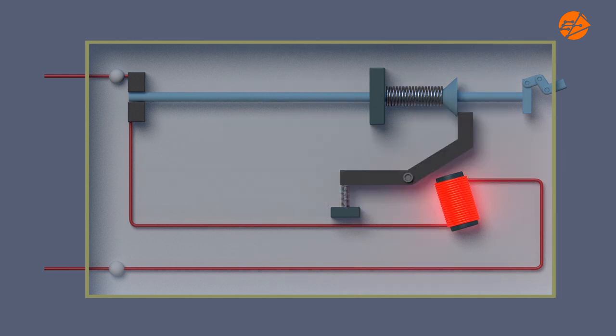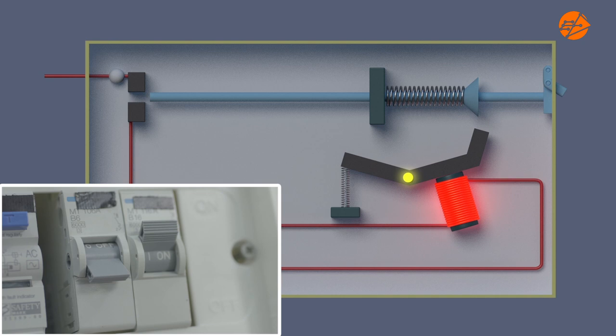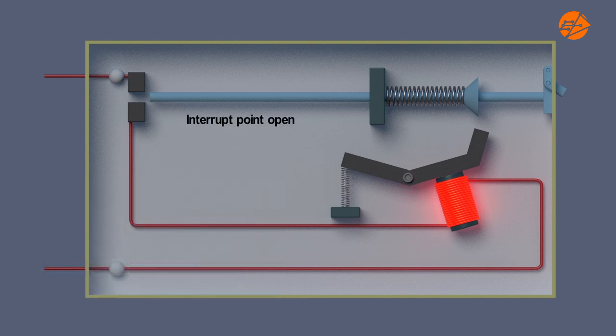The soft iron latch is attracted to the solenoid and it turns clockwise towards the solenoid above the pivot. The interrupt point is now open and the circuit is switched off.